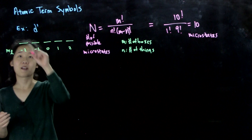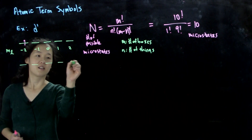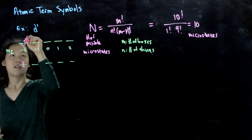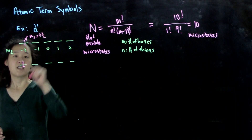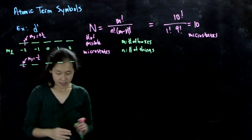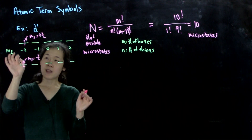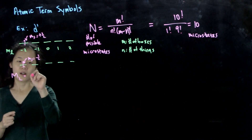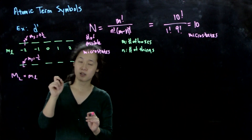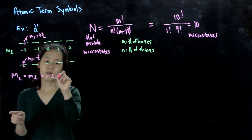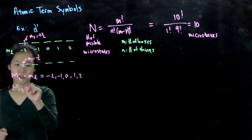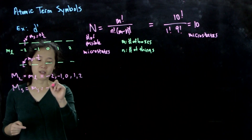These are two different microstates: m_L = minus 2, m_S = plus one-half versus m_L = minus 2, m_S = minus one-half. We can have 10 ways of placing it. Since we have one electron, big M_L equals little m_L — we don't need to add anything up. So big M_L can be minus 2, minus 1, 0, 1, 2, and big M_S can be minus one-half or plus one-half.